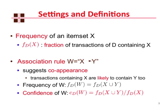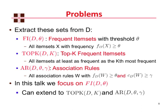Given these settings, the problems we are interested in involve extracting sets of itemsets or sets of association rules from the dataset. More precisely, given a minimum frequency threshold theta, we want to extract all the itemsets that have frequency at least theta — this is the set of frequent itemsets. There are variants of this problem for top-k frequent itemsets and for association rules, but in this talk we focus only on the set of frequent itemsets, although everything we say can be extended to top-k and to the association rules problem, and the details are in the paper.